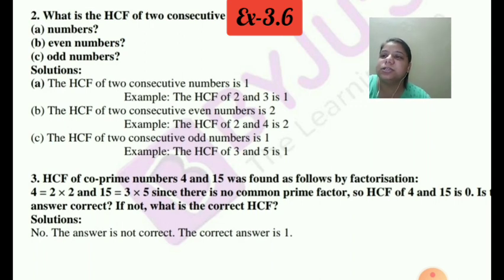Now Part B says what is HCF of 2 consecutive even numbers? So we have taken example of 2 and 4. 2 and 4 are 2 consecutive even numbers, right? So what is HCF of 2 and 4? It is 2. So you can check with any 2 consecutive even numbers. HCF will always be 2. Now I leave it on you only. Take more and more examples and check it out.